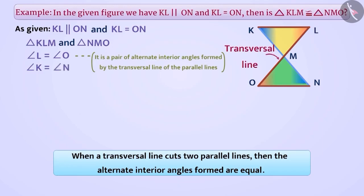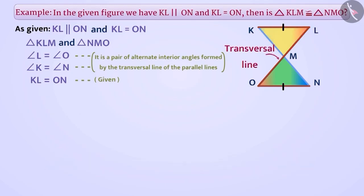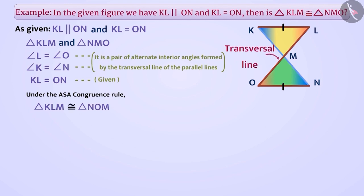Angle K is equal to angle N because it is also a pair of alternate interior angles formed by the transversal line of the parallel lines. And we are given KL is equal to ON. Since two angles — angle K and angle L — and the included side KL of triangle KML are equal to the two corresponding angles — angle N and angle O — and the included side ON of triangle NMO, therefore under the ASA congruence criterion, both these triangles are congruent.